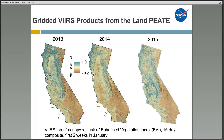Here is an example of how VIIRS top-of-canopy Enhanced Vegetation Index has been used to document changing vegetation conditions in California during one of the worst droughts in history. The blue areas indicate areas of green vegetation, while the dark brown areas are not vegetated. You can see gradual decreases in vegetation from 2013 to 2015. In 2015, the dark blue/green color indicates irrigated cropland.